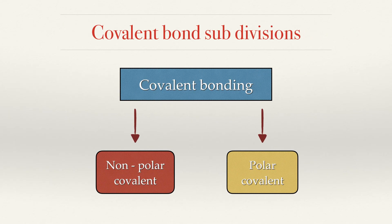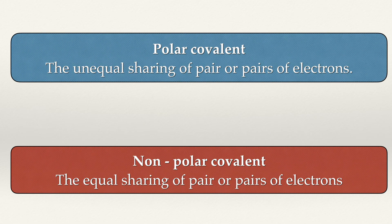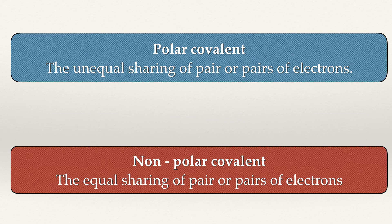Covalent bonds have two subdivisions: nonpolar and polar covalent. You must be able to distinguish between the two. Polar covalent is the unequal sharing of pairs of electrons; nonpolar covalent is the equal sharing of pairs of electrons. Electrons are constantly moving within the bonds of a molecule. I always imagine this as a cinema scenario — you and your friend are sharing a bag of popcorn but your friend is eating more than you, so while you are both technically sharing, it is in fact unequal sharing. Electrons may be shared within a bond but may be closer to one atom than another.